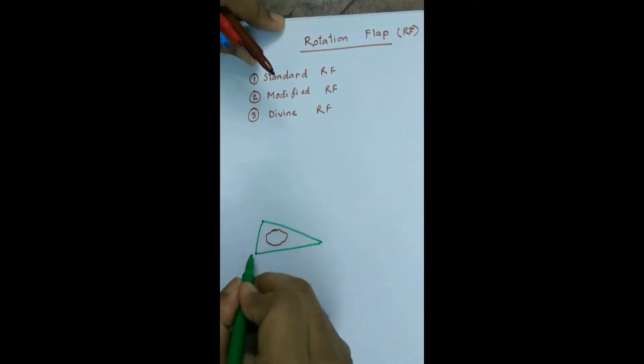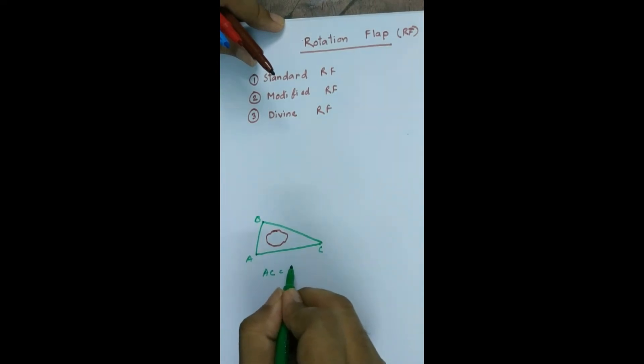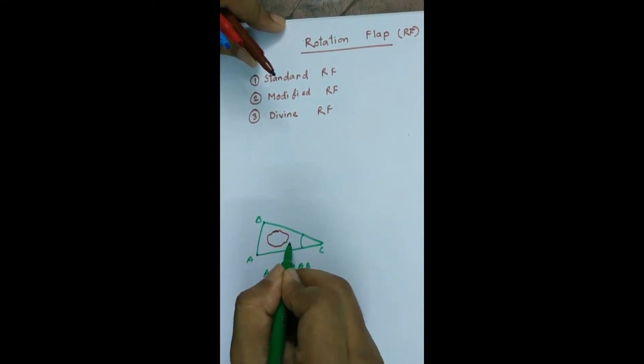Here, AC should be twice the base of the triangle that is AB. Almost 2 AB. And we have to keep in mind that this angle C should not be more than 30 degrees.